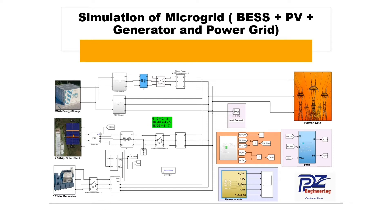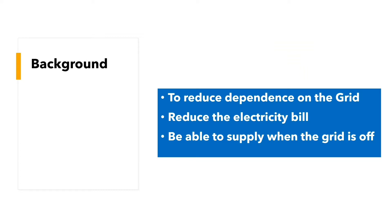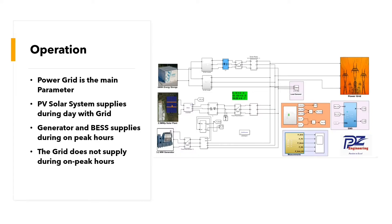The idea to develop this microgrid is to reduce dependence on the grid, reduce the electricity bill, and be able to supply power when the grid is off or during load shedding. The basic operation is: the power grid is the main source, the PV solar system supplies during the day with the grid compensating, and the battery energy storage system supplies during on-peak hours when the grid does not supply.